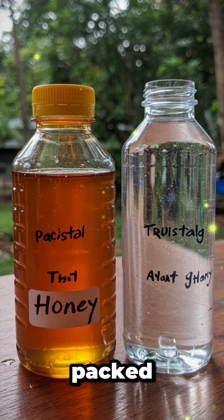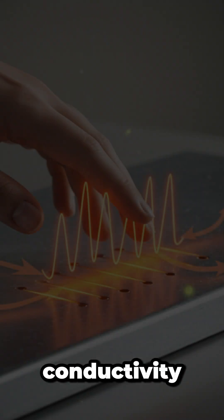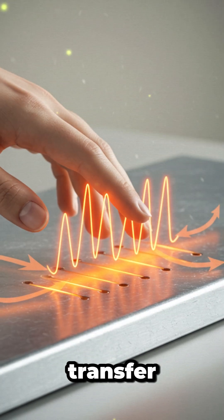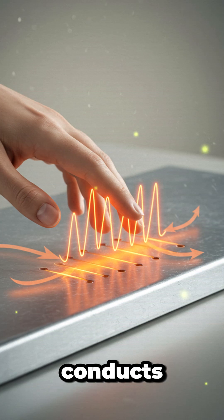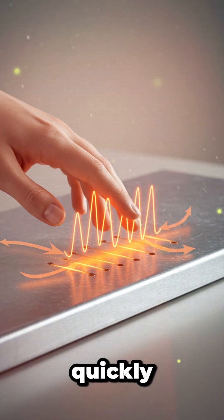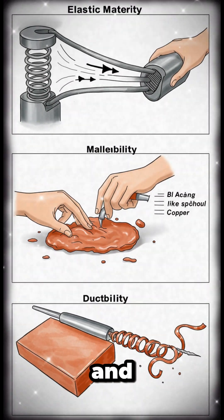Conductivity: some materials transfer heat and electricity well. That's why metal feels cold to touch - it conducts heat away from your hand quickly. Elastic materials stretch and return to their original shape.